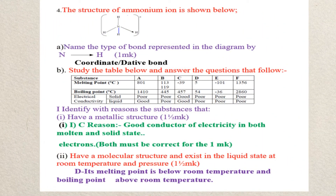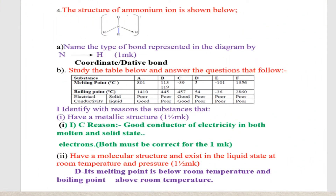The structure of ammonium ion is shown below. You are told to name the type of bond represented in the diagram by the letters N and H. That bond is called a coordinative bond. It is also called a dative bond.